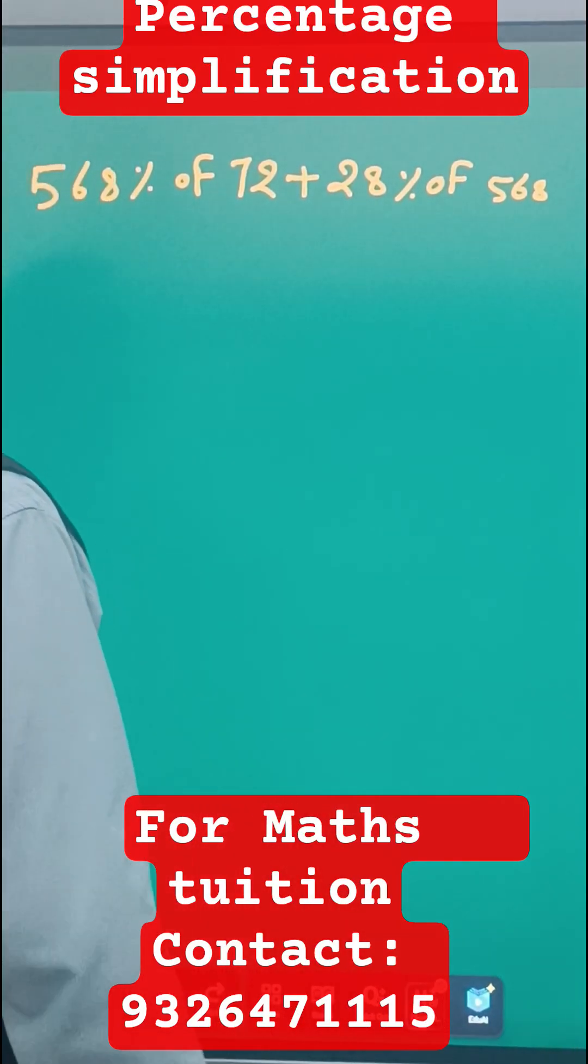We have one sum with the percentage. The sum is 568% of 72 plus 28% of 568.